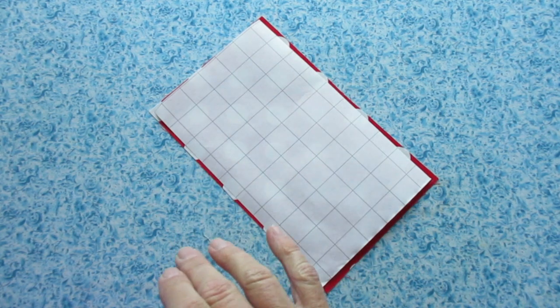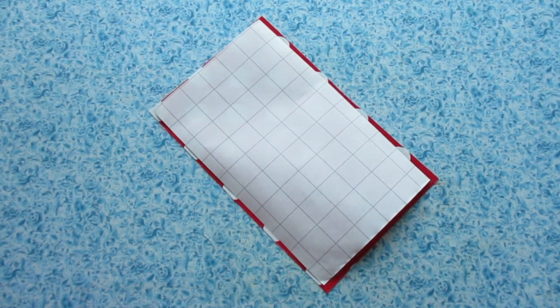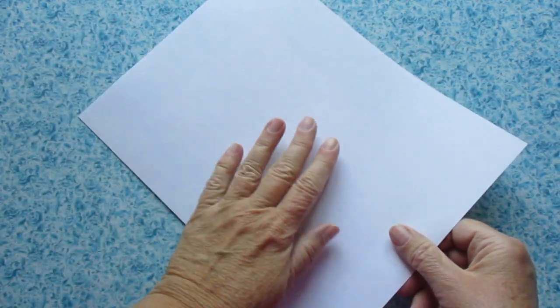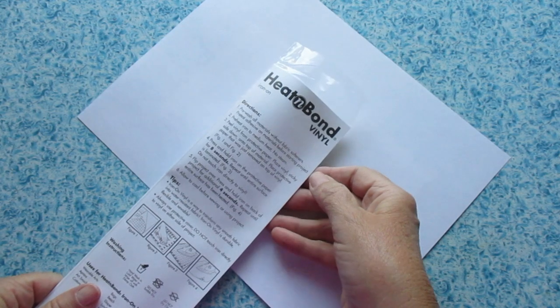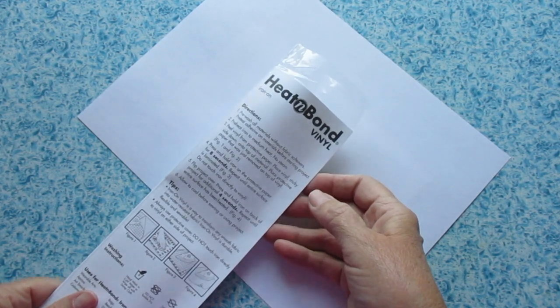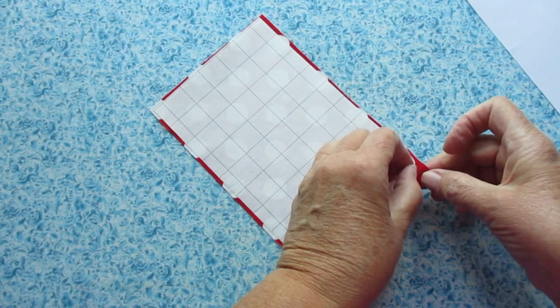Now because the vinyl is so sticky and I want to protect my iron, I actually add another piece of paper on top just to be safe. And then I follow the directions on my iron-on vinyl packaging to get it ironed on. Let it cool and peel the paper off.